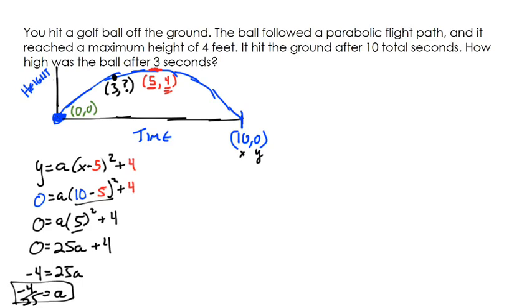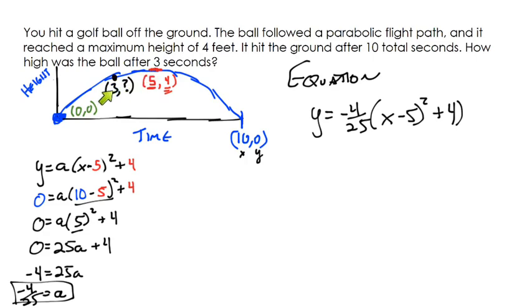Here's our final equation that's describing the situation. We have y = (-4/25)(x - 5)² + 4. We have the five and the four from our given vertex and the a value that we solved for. Now it says how high was the ball after three seconds. In other words, what is y when x is three? All we got to do is put in three for x and work it out.